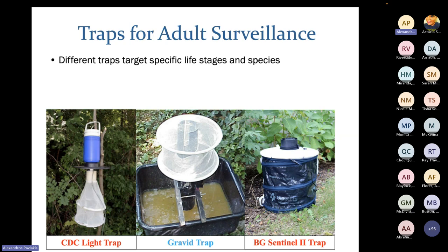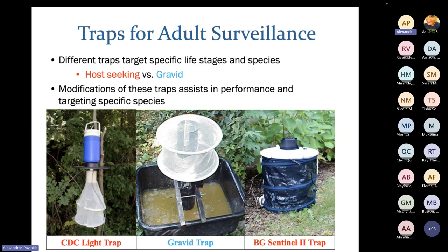We utilize three major trap types for adult surveillance. Different traps target different life stages and species based on the bait used. In red are host-seeking traps — targeting mosquitoes looking to take a blood meal. In blue is our gravid trap, targeting the gravid stage — mosquitoes that have already taken a blood meal and are looking for a place to lay eggs. Our host-seeking traps are the CDC light trap and BG Sentinel trap; our gravid trap targets blood-fed females.